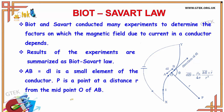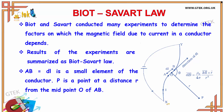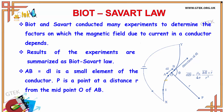Here AB equals DL is a small element of the conductor, where P is the point at a distance R from the midpoint O of AB. Angle theta has been maintained and current is passing in this direction from X to Y. DL is of differential length and P is the point at distance R from midpoint O. So dB bar is given as mu naught by 4 pi, equals I DL vector cross R cap divided by R squared.